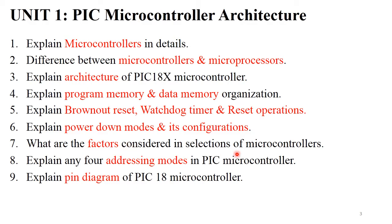Next: 'What are the factors considered in selection of a microcontroller?' — mention any 4 to 5 factors and explain them, generally for 4 to 6 marks. Then, 'Explain any addressing modes in PIC microcontroller' — there are 6 to 7 addressing modes, and you need to explain any 4 with diagrams and examples. Finally, the PIC18 microcontroller pin diagram — draw the diagram and explain it port-wise: port A, port B, and port C with their pins. These last two questions are generally asked for 8 marks.